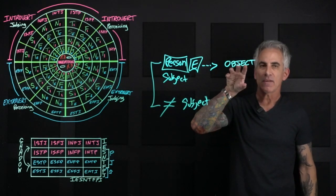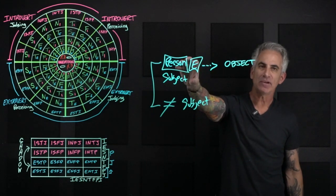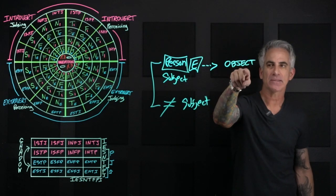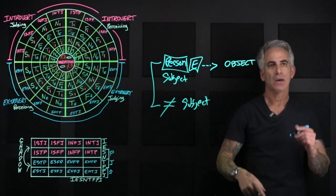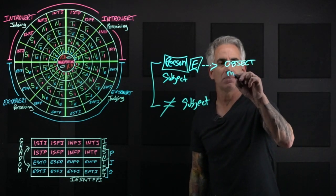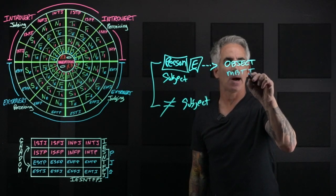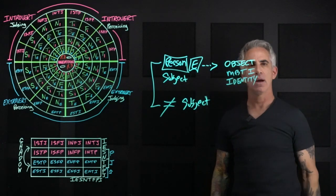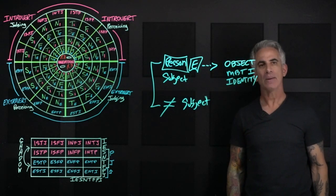Once that occurs, this individual looking at object, the object becomes the MBTI identity. That is now the object.